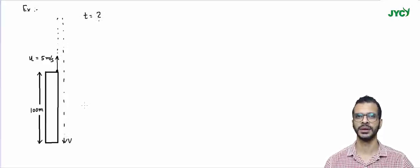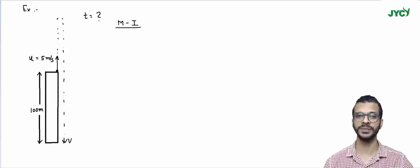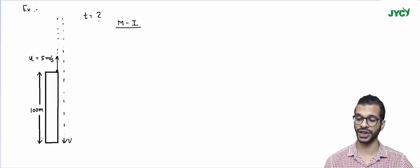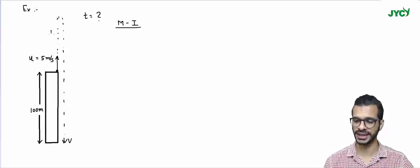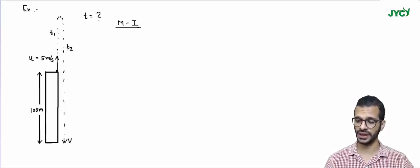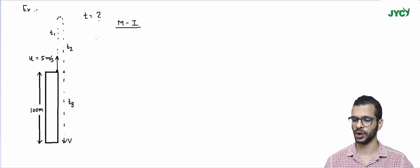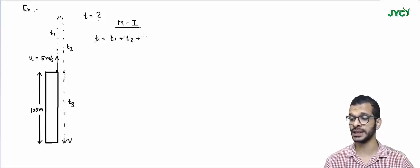Let's look at method one to solve this question. In method one, the ball first goes up from the starting point — let's say that takes time T1. Then the ball comes back down to the same point — that takes time T2. Then from that point the ball falls to the ground — that takes time T3. So total time will be T1 plus T2 plus T3.